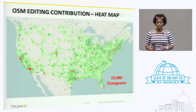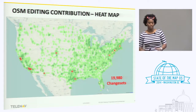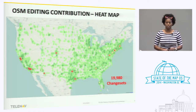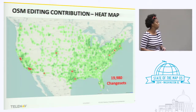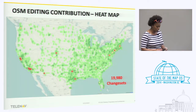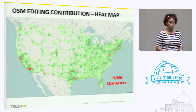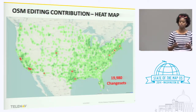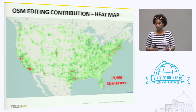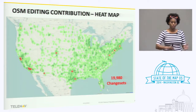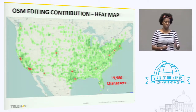We've created nearly 20,000 changesets in the data — all the errors that we've encountered and rectified. So we've done a lot of editing. And through that editing, we've developed a workflow in terms of identifying the errors, figuring out how we're going to rectify them, engaging the community, and then finishing the errors.